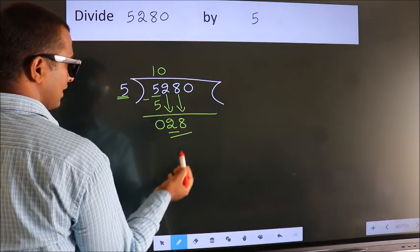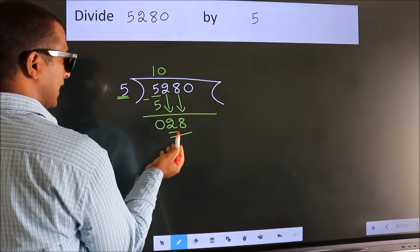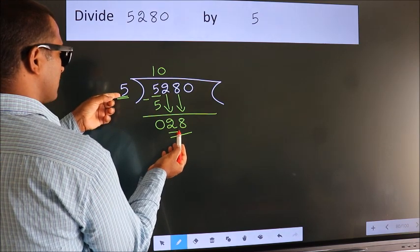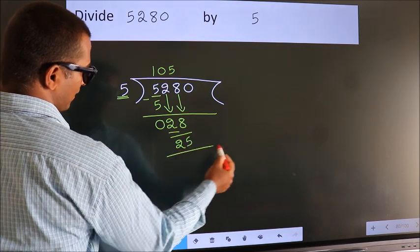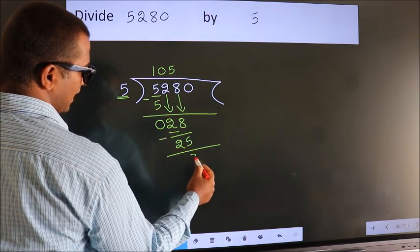So 28. A number close to 28 in the 5 table is 5 fives, 25. Now we subtract. We get 3.